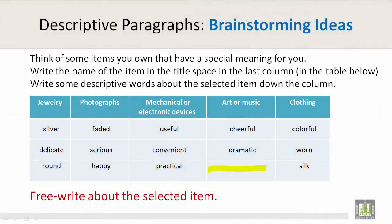Let's take a look at some other sections. For example, jewelry — we have silver, delicate, and round. Or photographs — we have faded, serious, and happy.